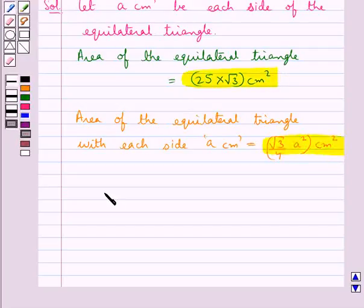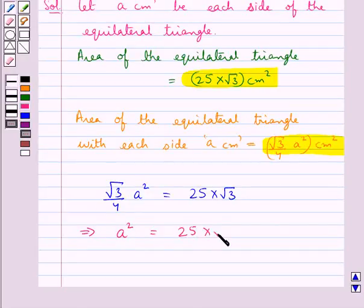So we have root 3 by 4a square is equal to 25 into root 3. This means we have a square is equal to 25 into root 3 into 4 upon root 3. Now this root 3 root 3 cancels.